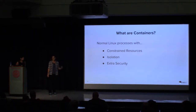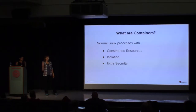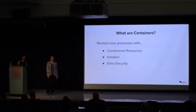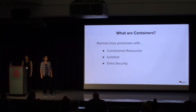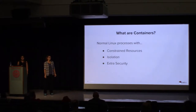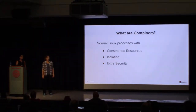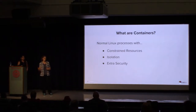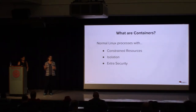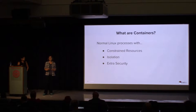Linux containers, when we talk about them, they're normal processes running on a Linux host and they have three things going for them: they're constrained, they're isolated, and they have some extra Linux security features added. How are they constrained? Well, Linux has cgroups — control groups — as a mechanism that can limit the amount of resources like CPU or memory that a process in your container can use.